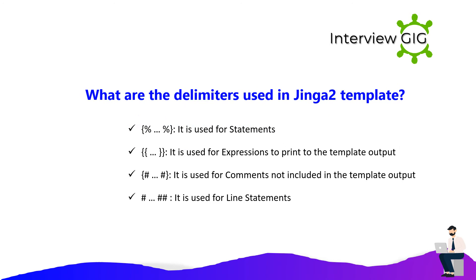What are the delimiters used in Jinja 2 templates? The percent delimiter ({% %}) is used for statements. The double-brace delimiter ({{ }}) is used for expressions to print to the template output. The hash delimiter ({# #}) is used for comments not included in the template output. The hash delimiter (## ) is used for line statements.